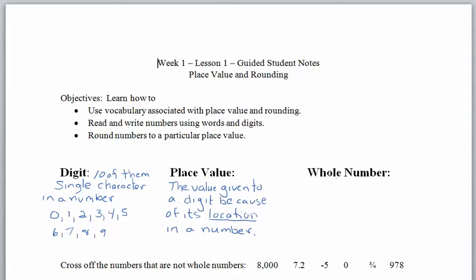A whole number means complete — we don't have any parts. In terms of numbers, that means we're not going to use any decimals, any fractions, and we're not going to use any negative numbers. So whole numbers as a set start at zero, and then we count up by one: zero, one, two, three, four, and so on and so forth. That dot dot dot means the pattern continues on and on through infinity.